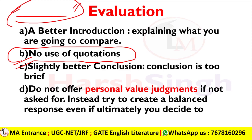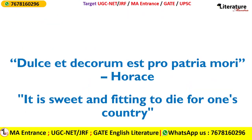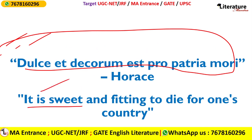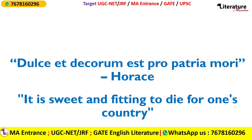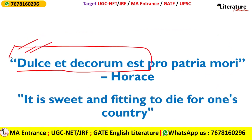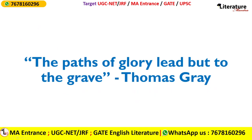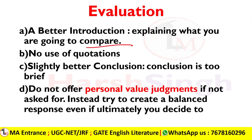Ideally you should use a quotation at the beginning, because this is a topic about war and there are many apt quotations available. For example, the ancient Latin quotation by Horace: 'Dulce et decorum est pro patria mori' — meaning 'It is sweet and fitting to die for one's country.' Wilfred Owen also wrote a poem called Dulce et Decorum Est, showing how this is a great falsehood. Alternatively, Thomas Gray's famous line: 'The paths of glory lead but to the grave.' You can ideally begin with such a good quotation, but this student has not used any at the beginning — which is another weakness.